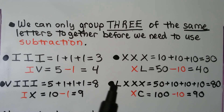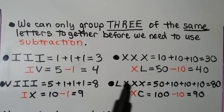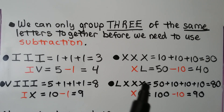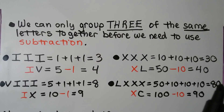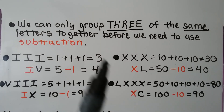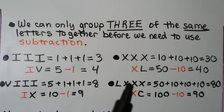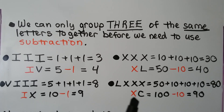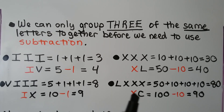Here we have an L for 50, and then 3 tens — that's 80. But we can't have 4 X's; we can only have 3 of the same kind of letter. That means we have to move to a 100 minus a 10, written as XC, which equals 90.